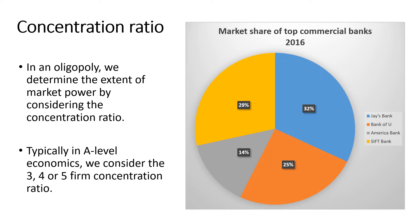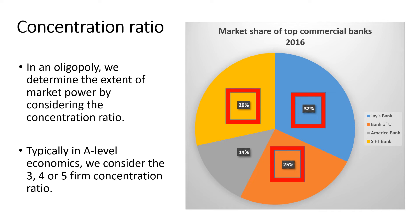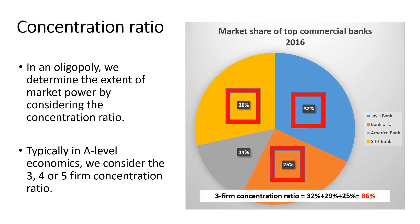It's actually quite easy to calculate. In the case of the three firm concentration ratio, we select the market share of the three largest firms in the industry and add their market share percentages together. In this case, the three firm concentration ratio is 86%. The four firm concentration ratio would be 100%. Whenever you're asked to calculate a concentration ratio, just add the relevant number of the largest firms' market shares together.